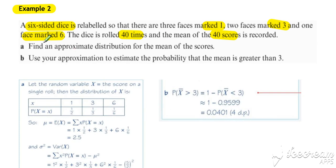Now the question says find an approximate distribution for the mean of the scores. So it's wanting us to find the distribution of x bar. X bar is the mean of the scores.